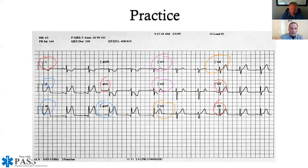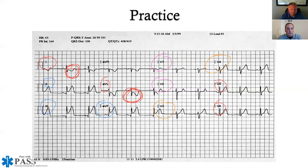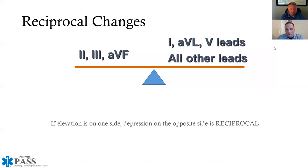In summary, the alarming finding is ST elevation in leads II, III, and AVF — inferior wall MI. Additionally, inverted T waves and depression in leads I and AVL were noted earlier, making the full interpretation: inferior wall MI with reciprocal changes in leads I and AVL.